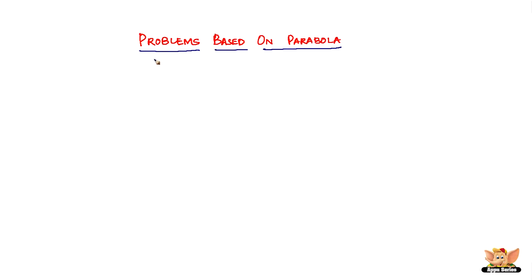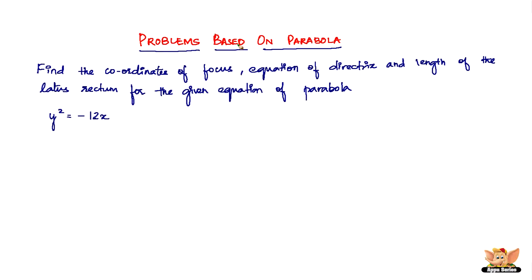In this video, let us continue to solve more problems based on parabola. Here we are with a question which reads: find the coordinates of focus, equation of directrix, and length of the latus rectum for the given equation of parabola y² = -12x. This is definitely of the form y² = -4ax.